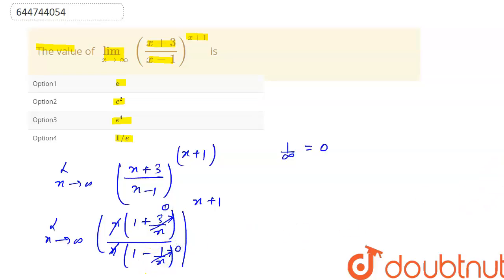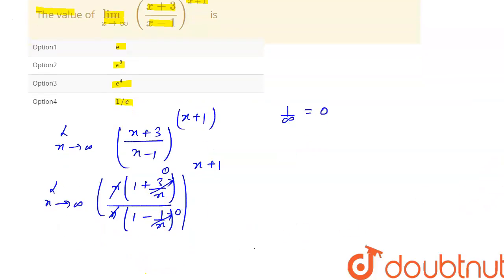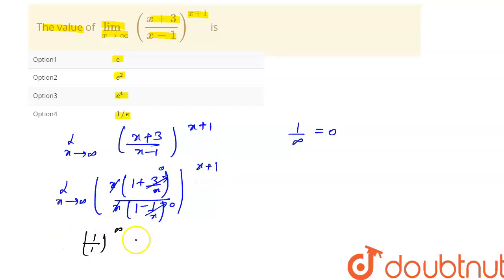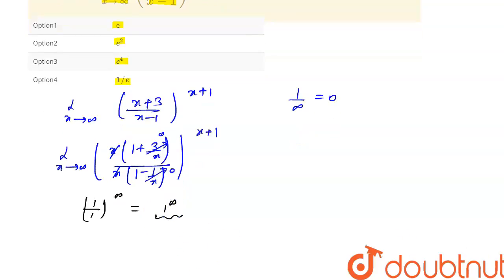So from here we have 1/1 to the power — if I put x equal to infinity it will be infinity. So it is equal to 1 to the power infinity, which is an indeterminate form.